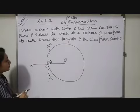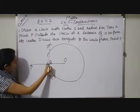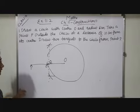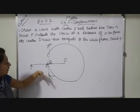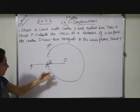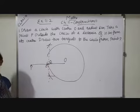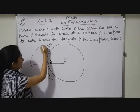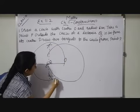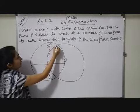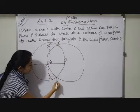Now after that what we have to do? I will fix up my rounder at Q, exceed till P. Or you may write fix your rounder at Q, or you may also write to take Q as a center and QP as a radius, draw a circle which intersects the previous circle at point T and T dash.